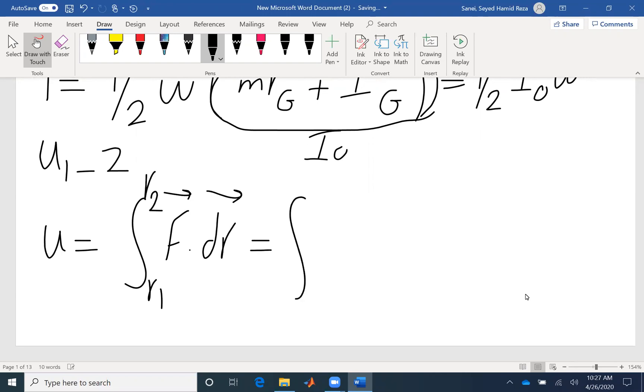Or if I want to write it in scalar form, I would have F cosine theta. Theta refers to the angle between the force and the displacement. So if theta is zero, the work is maximum. If theta is 90, the work is zero.